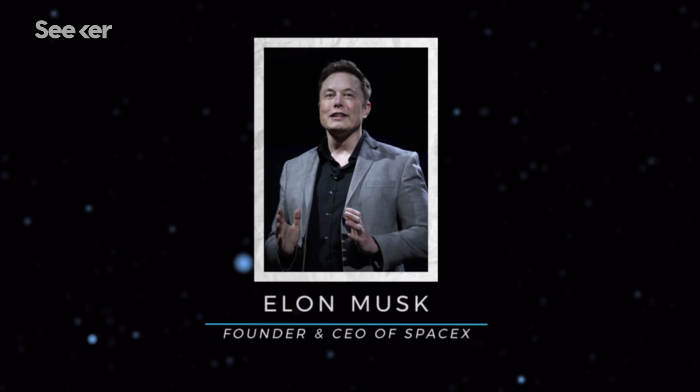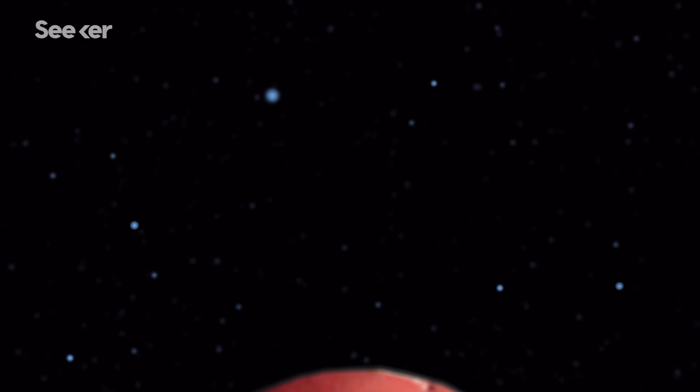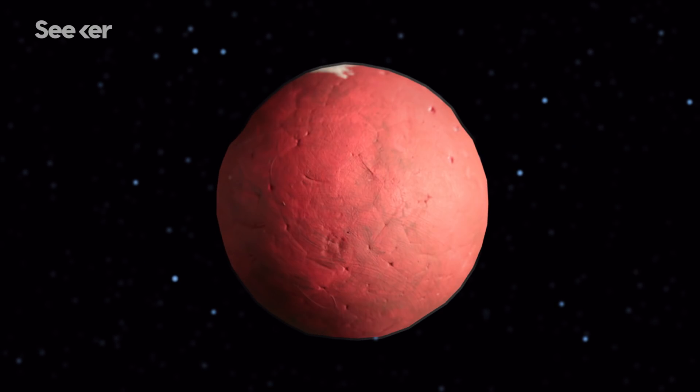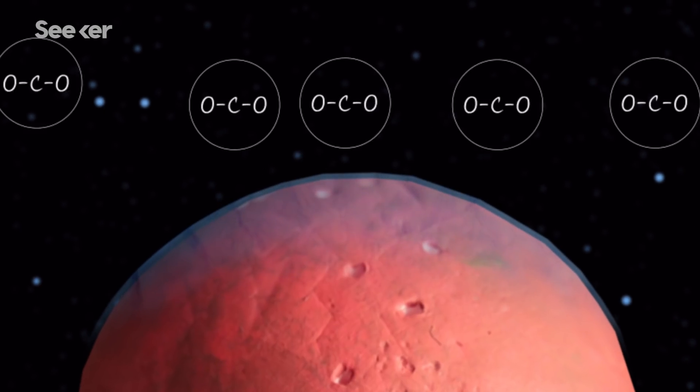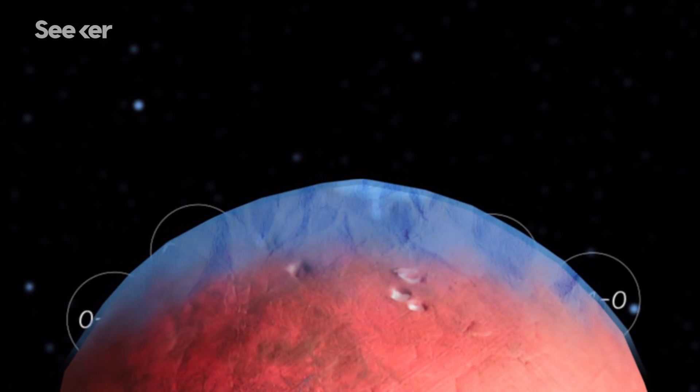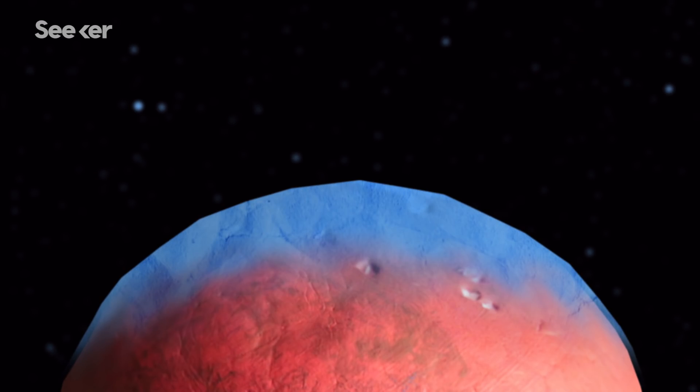This next terraforming idea takes us back to SpaceX founder and CEO Elon Musk. He's proposed melting Mars's polar ice caps by dropping thermonuclear bombs on them. The explosions would release carbon dioxide that would thicken the Martian atmosphere. At that point, liquid water might be able to flow on the surface and it could start a greenhouse effect.